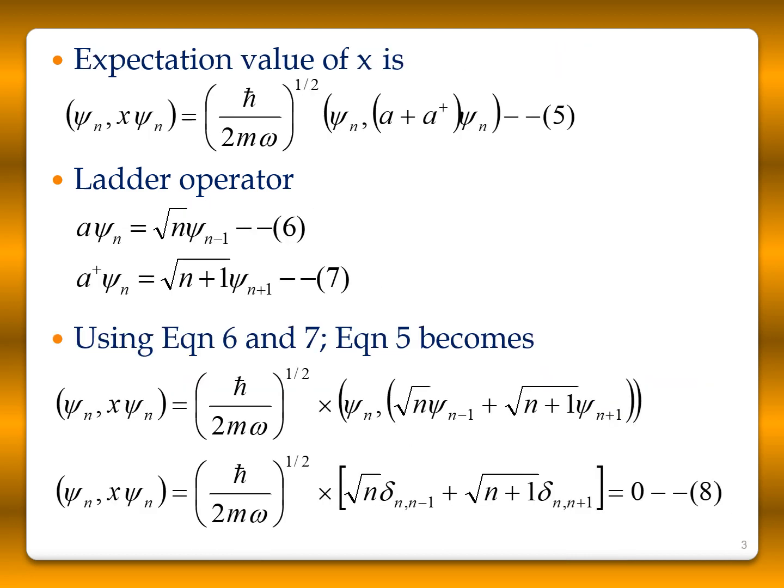The expectation value of x is the inner product ⟨ψ_n | x | ψ_n⟩, which equals (ℏ / 2m omega)^(1/2) times ⟨ψ_n | (a + a†) | ψ_n⟩. The ladder operator a acting on ψ_n gives √n · ψ_(n−1), and a† acting on ψ_n gives √(n+1) · ψ_(n+1).